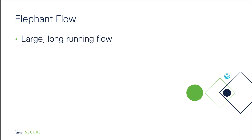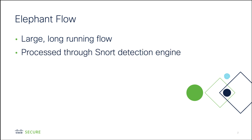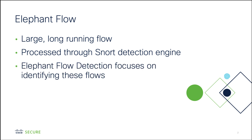An elephant flow is a large, long-running flow that is processed through the secure firewall. Inspecting an elephant flow may have little or no security value and it could consume valuable detection resources which could be better utilized inspecting other traffic. The purpose of elephant flow detection is to assist you in identifying these flows so you can decide whether to continue inspecting the traffic or tune your rules and policy to pass this traffic without full deep flow inspection.